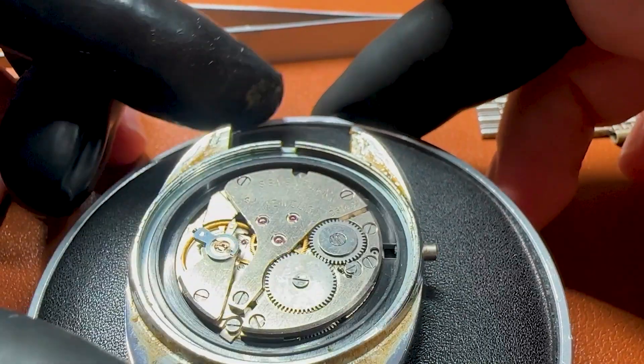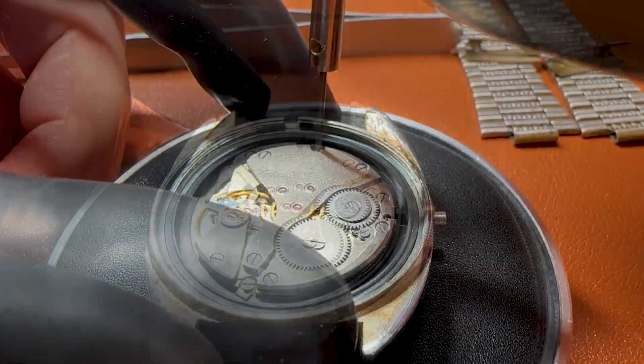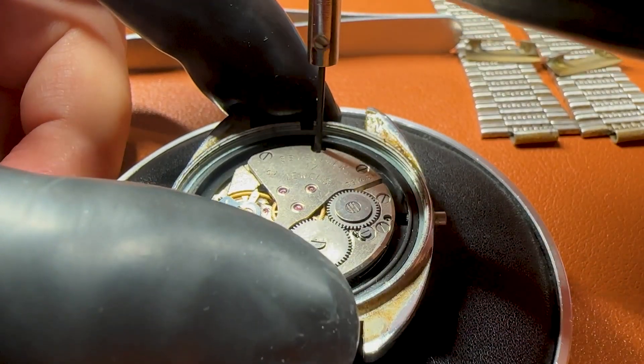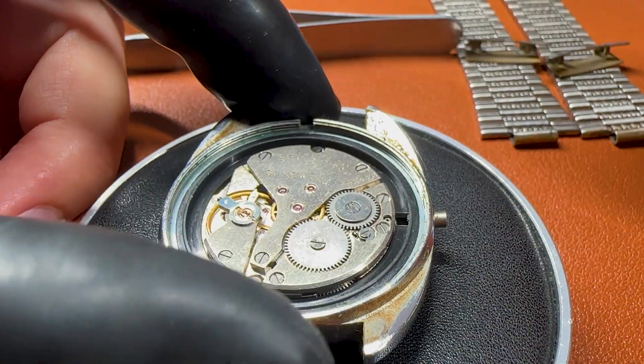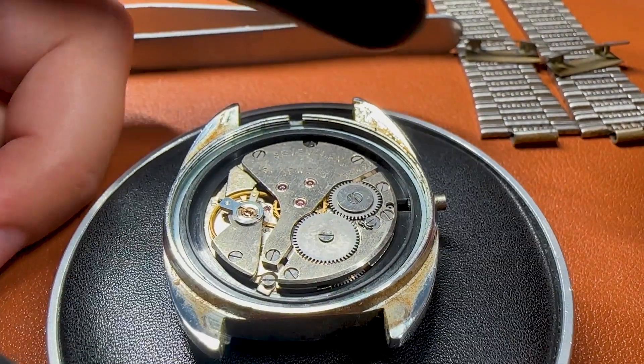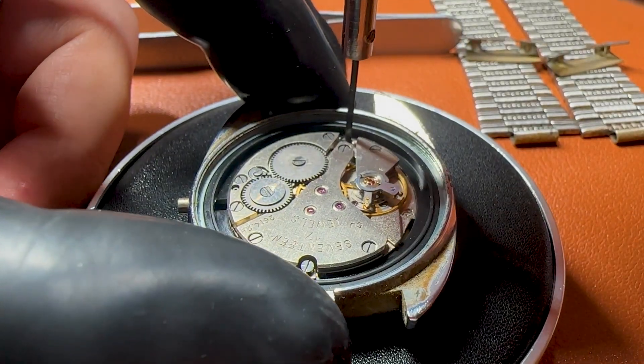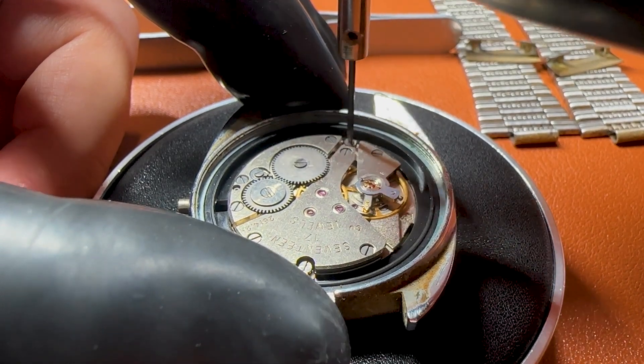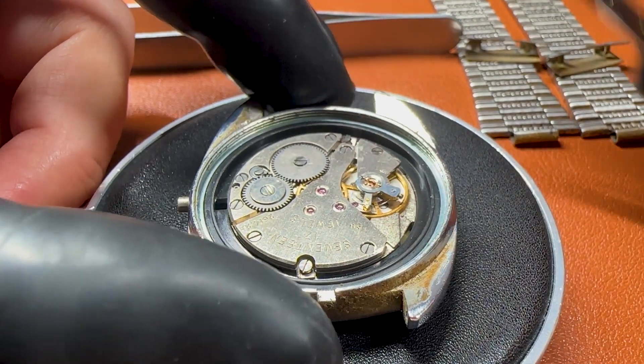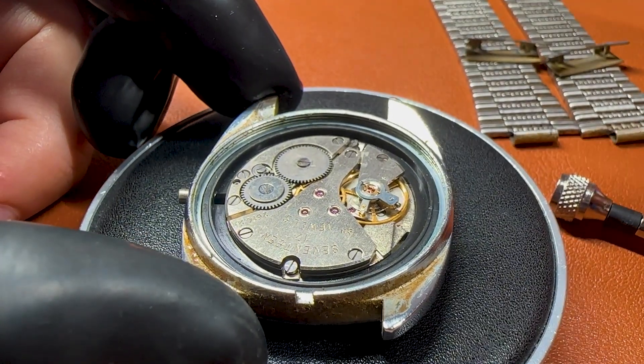It's the 2614.2H movement. It features a manual wind, a sweep second and a date, and the date is set by changing the time near the 24 hours area. It has 17 jewels and a power reserve of 46 hours.